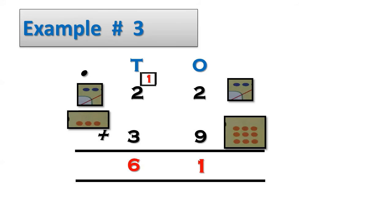Now when we add all the 10s digits, there are 3 tens digits all together. Let's count them: here we have 1, here we have 2, and in the end we have 3. Now count how many balls all together: 1, 2, 3, 4, 5, 6. We have 6 balls all together. Students, now you tell me — what answer will come after adding 22 and 39? Yes, the answer comes 61.